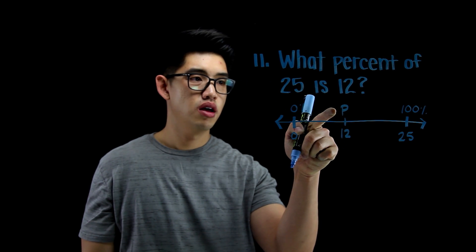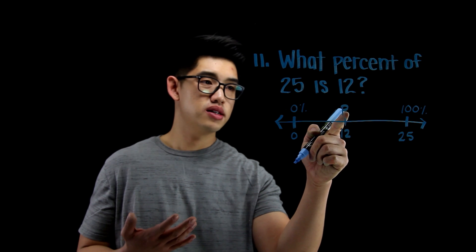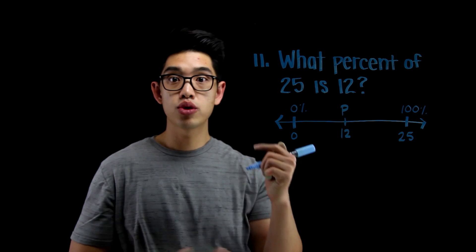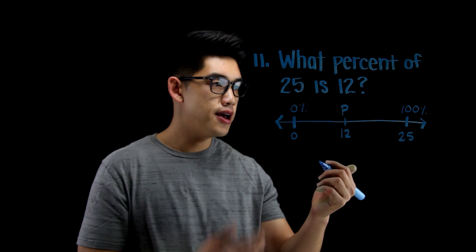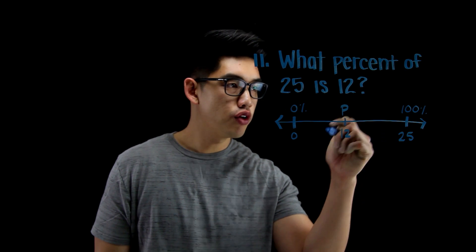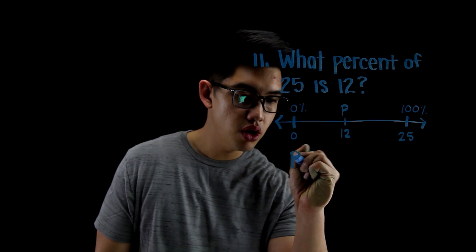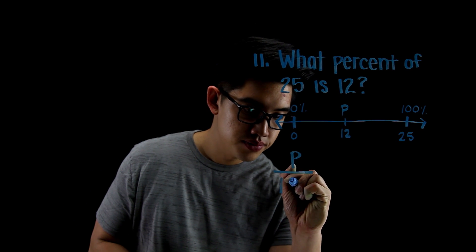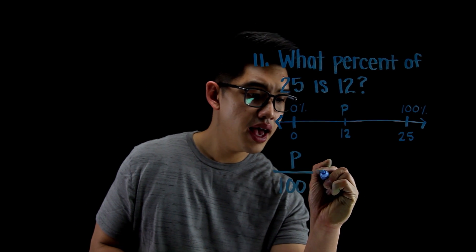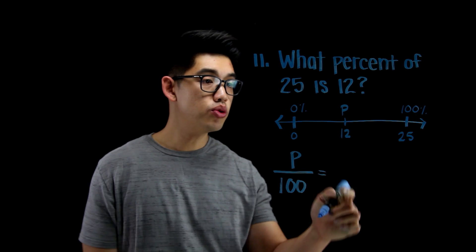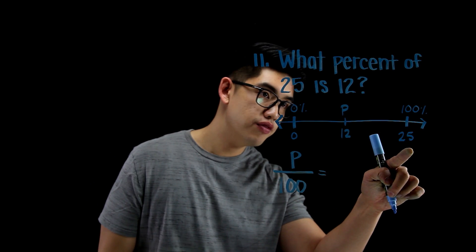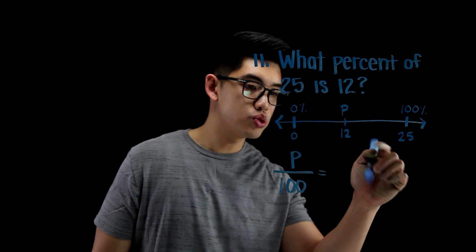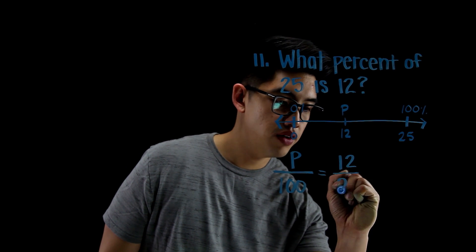I need to try to figure out what is this percent right there. I'm going to write P for percent. I don't know what percent that is. It's not 50%. It's going to be a little bit less than 50%. So I could write a proportion. I can say P over 100%. P, I don't know what percent that is, out of 100%, has to be proportional. It has to be equal to 12 over 25. See the pattern? I want P over 100, has to be equal to 12 over 25.